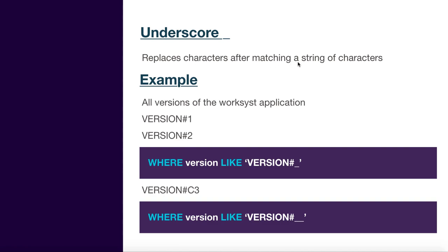The second wildcard character is the underscore, which replaces a single character after matching. For example, say you have a work system application with a column for version numbers in a format like 'version#1', 'version#2'. If you write LIKE 'version#_', you use an underscore because you're sure there's only a single character after the number symbol. Using percent would be too broad here.